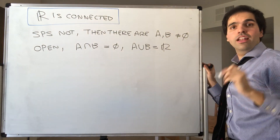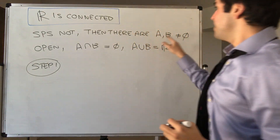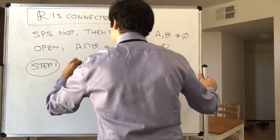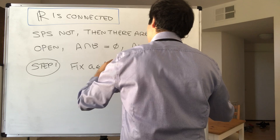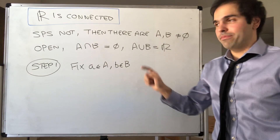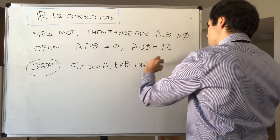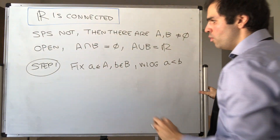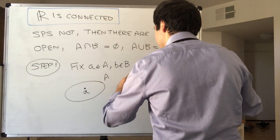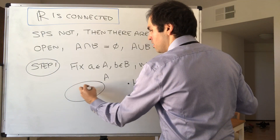The proof relies on the following. So step one: since A and B are non-empty, there's an element in A and an element in B. So fix a in A and b in B. Of course, a is not equal to b because A intersect B is empty. So without loss of generality, assume a < b. So what we have: you have a maybe here, and then here you have b. What we would like is to consider the biggest interval that's in A.